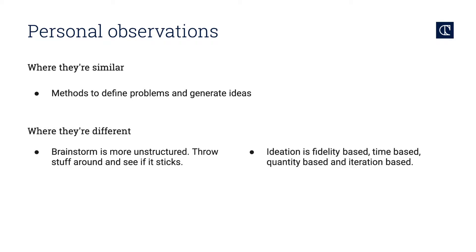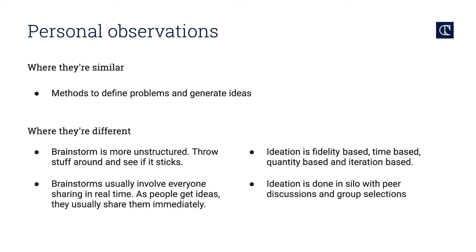My personal observations: where they're similar, they're both methods for generating ideas. Where they're different, brainstorm is much more unstructured. Brainstorm has a tendency to throw stuff on the wall and see if it sticks, whereas ideation is specifically framed to be fidelity, time, quantity and iteration based. Brainstorming usually involves everybody sharing in real time, so as people get ideas they usually blurt them out loud, maybe they'll do a couple drawings here and there and then kind of show them to everybody. Whereas ideation is done in silo with peer discussions at the end, which is known as diverging and then converging.